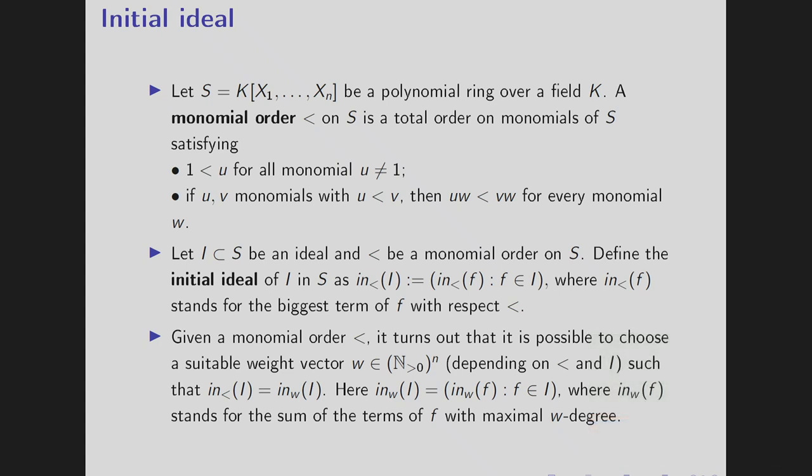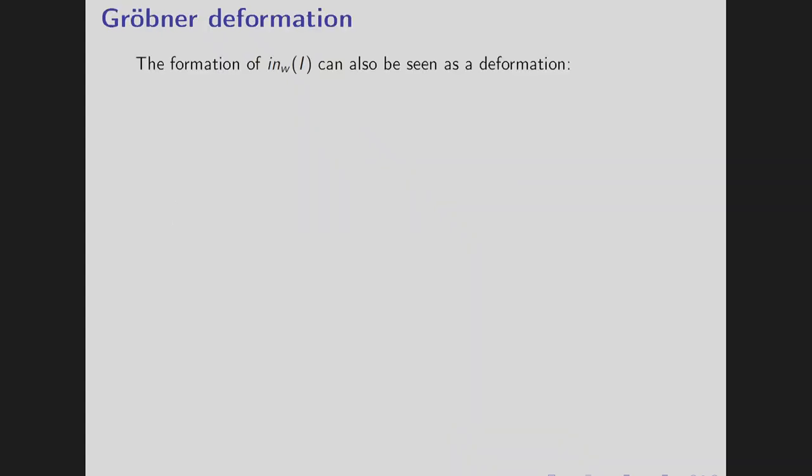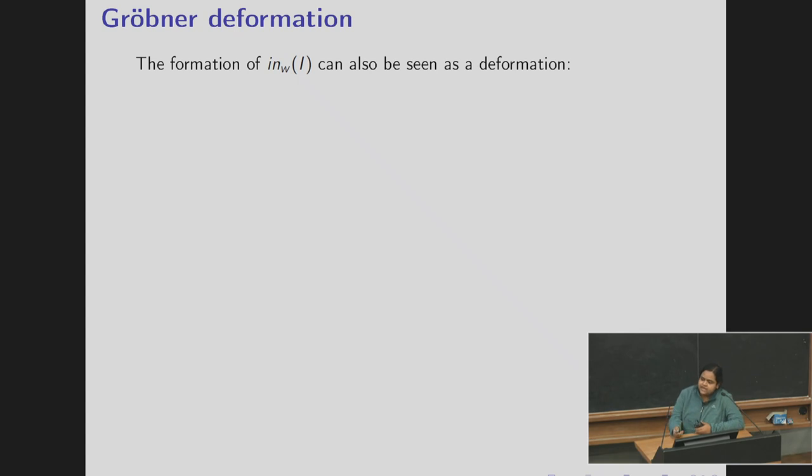Then we say what is the definition of initial ideal. Let I be an ideal and less than be a monomial order. Define the initial ideal of I as the initial ideal of f, the ideal generated by in(f) where in(f) is the biggest monomial appearing in f with respect to that ordering. Given a monomial order it is possible to find a weight ordering w where in(I) is the same as in_w(I). The advantage of this realization is that in_w(I) can be realized as a deformation.